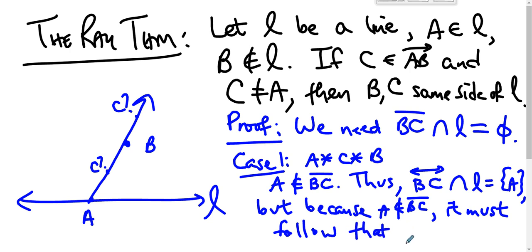But because A is not on segment BC, it must follow that segment BC intersect line L is the empty set. Why? So if C is here, then here is segment BC. A is not on that segment. The line BC intersects line L in the only point it can—there's only one intersection point between two lines—but A is not on this segment and so this segment doesn't hit the line.